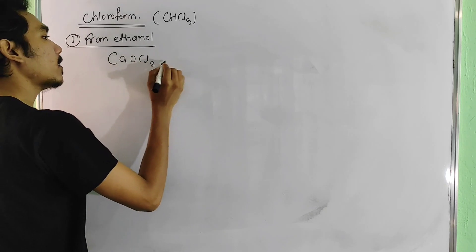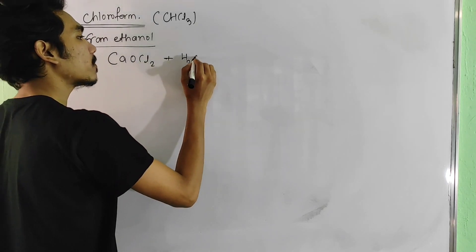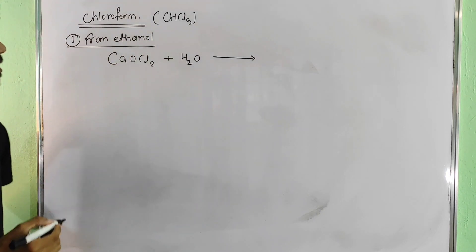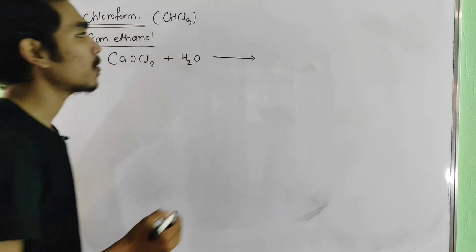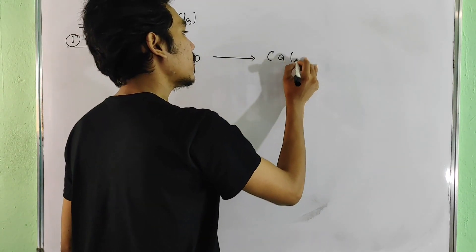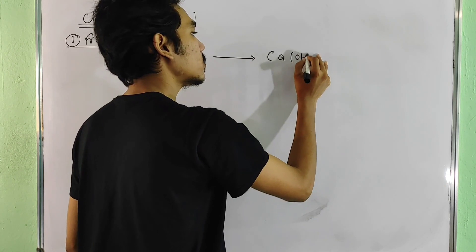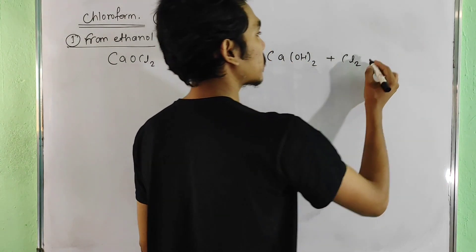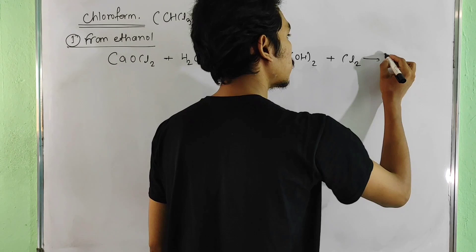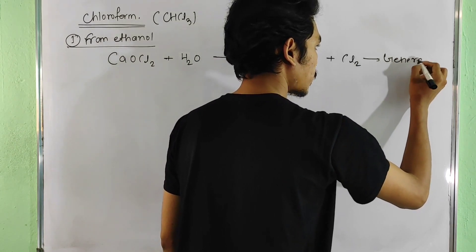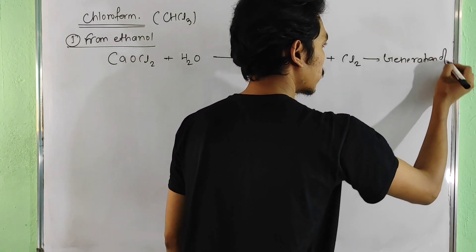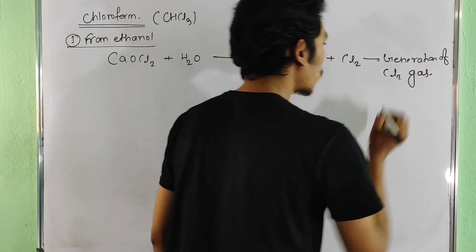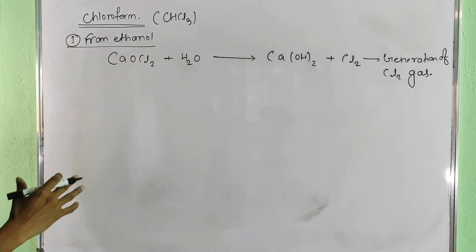We use bleaching powder CaOCl2. When put in water, it reacts to give calcium hydroxide Ca(OH)2, and generates Cl2 gas. When we have the chlorine gas, we put it in the reactions.